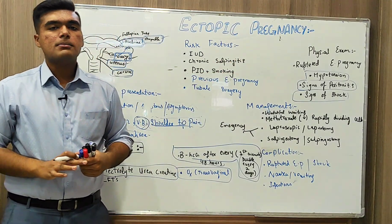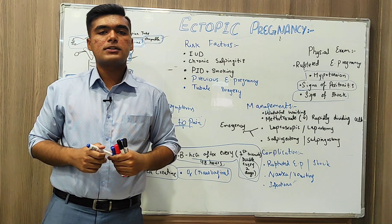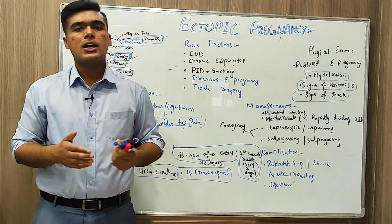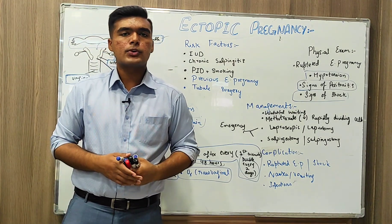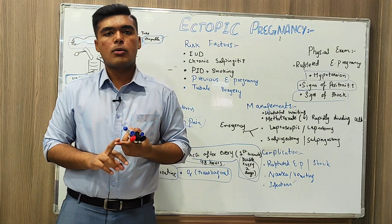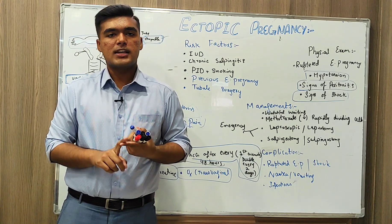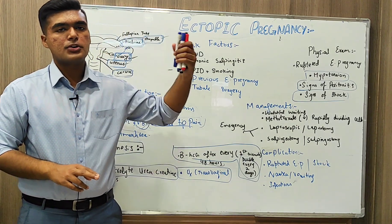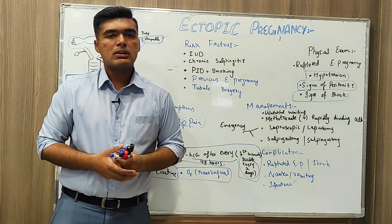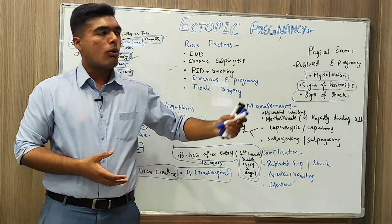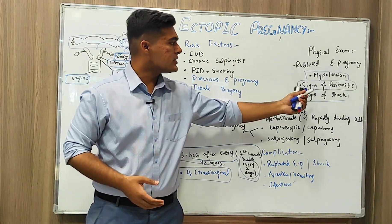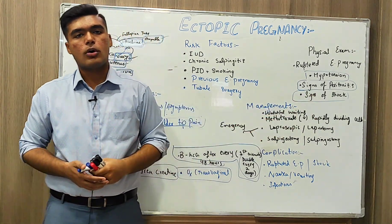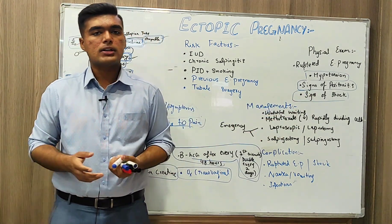We are often presented with a clinical scenario in exams where a woman of reproductive age — say a 25-year-old — presents with nausea, vomiting, vaginal bleeding, abdominal pain, pain radiating towards the shoulder tip, signs of hypotension, ruptured ectopic pregnancy, signs of shock, and peritonitis.